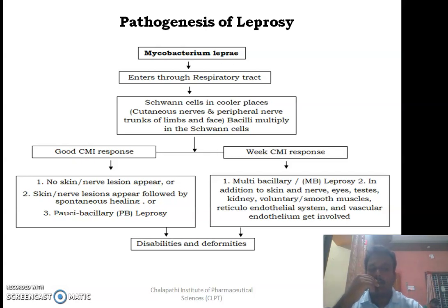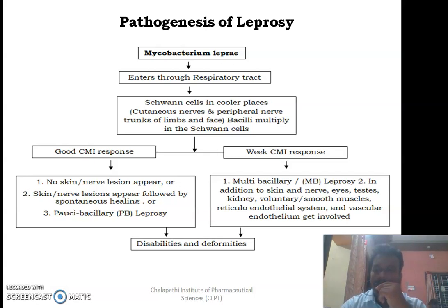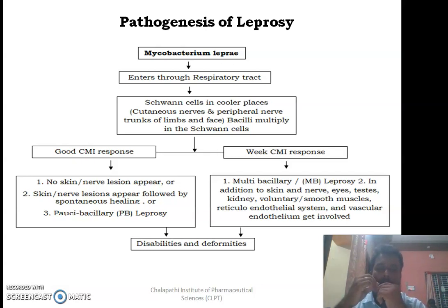The lesions that develop in leprosy depend on the cell-mediated immunity of the affected individual. If the individual has a good cell-mediated immune response, we observe no or very rare skin lesions, which may undergo spontaneous healing, or the individual may develop paucibacillary leprosy. If the individual has a weak cell-mediated immune response, multibacillary leprosy develops, with involvement of eyes, testes, kidneys, voluntary and smooth muscles, the reticuloendothelial system, and vascular endothelium, resulting in disabilities and deformities.